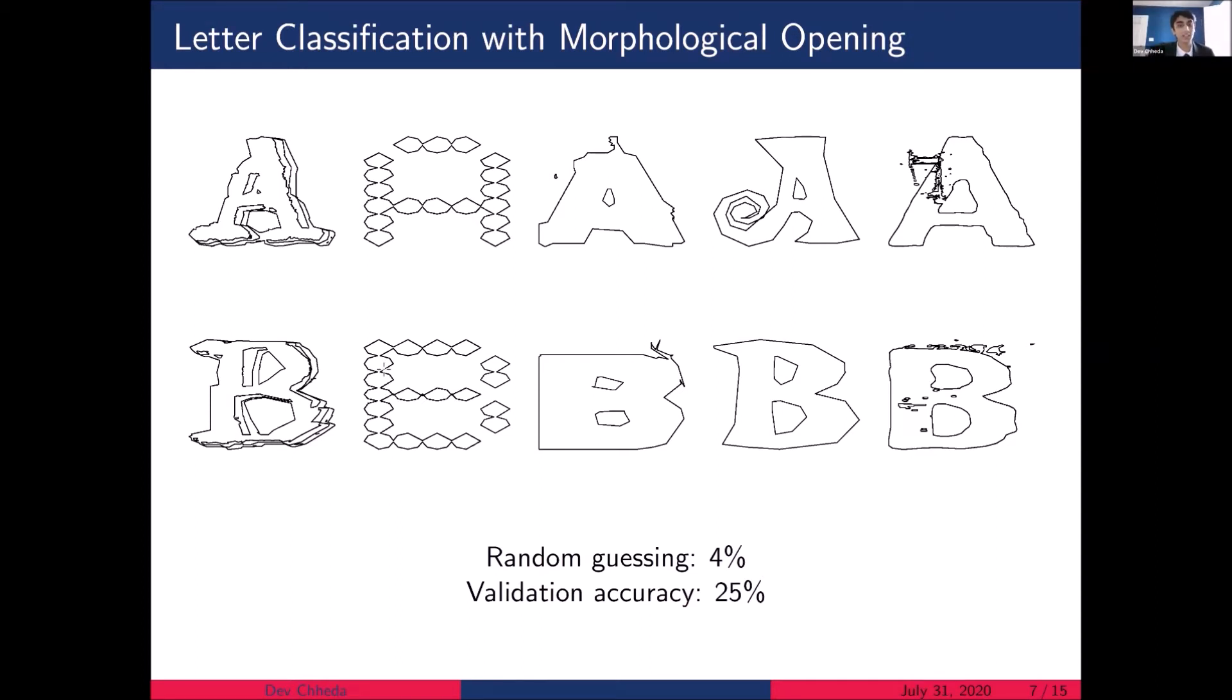So we follow the same process as before. And after training, we achieve validation accuracy of 25%, which is much lower than what we had before. Again, for context, if we were guessing randomly, we have 26 letters, so we would have an accuracy of about 4%. So we're certainly doing better than random guessing. But our low accuracy leads us to question whether this is due to just the variation in the data set itself, or due to some limitations of the morphological opening bound.